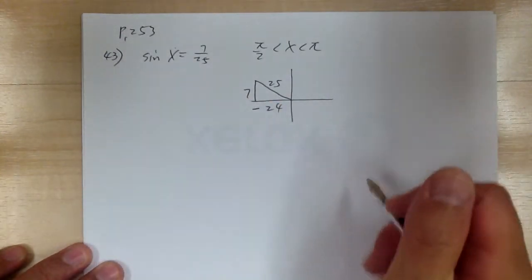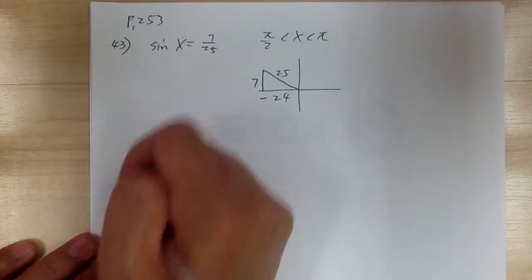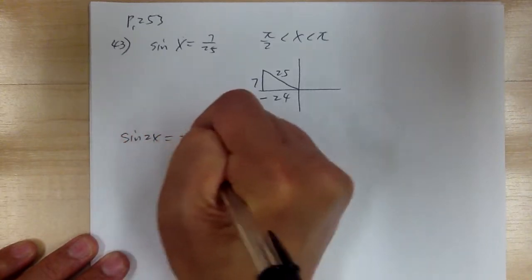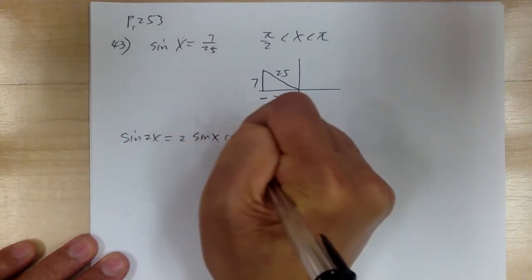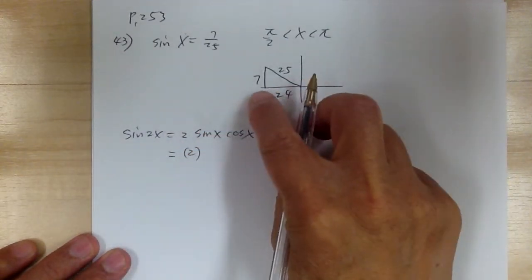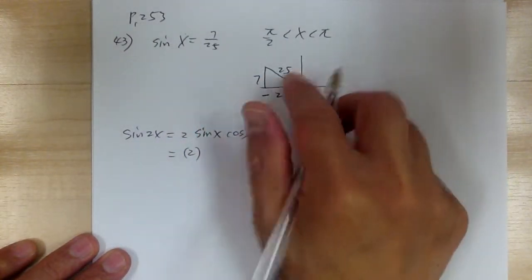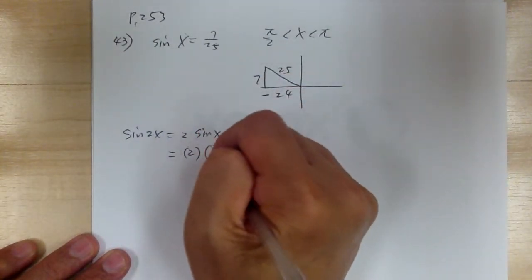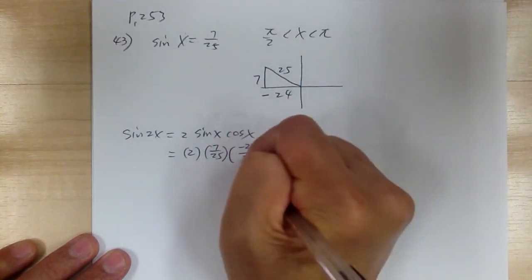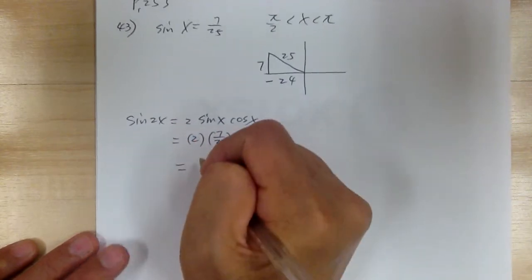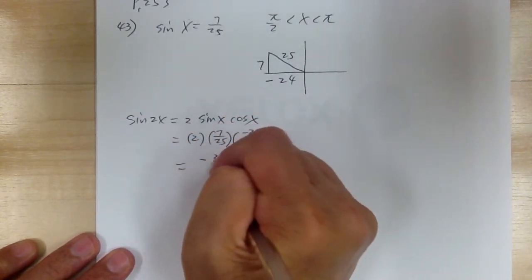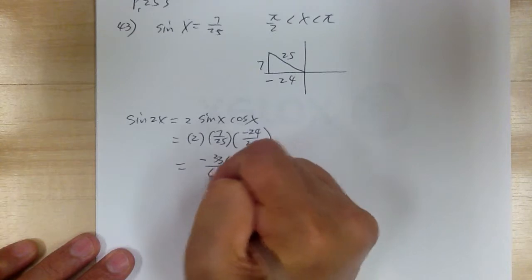So now you can find sine of 2x. Sine of 2x equals 2 sine x cosine x. So sine of x is 7 over 25, cosine of x is negative 24 over 25. Multiply out, and you get negative 336 over 625.